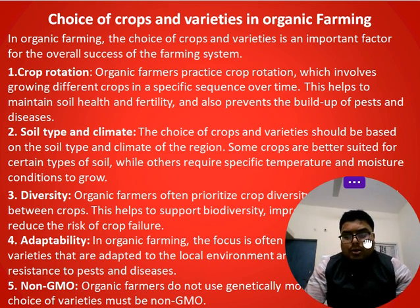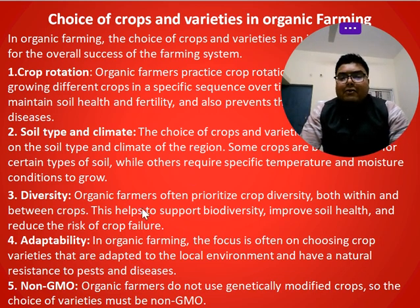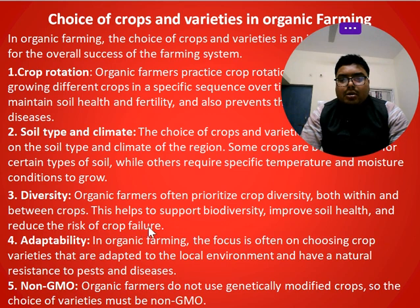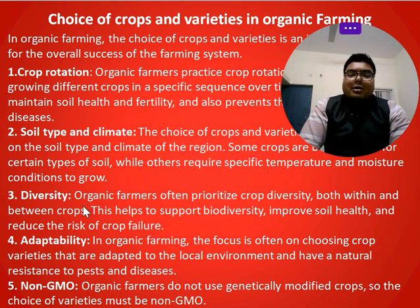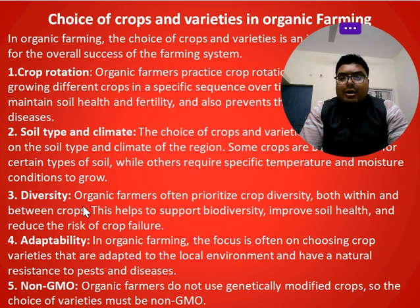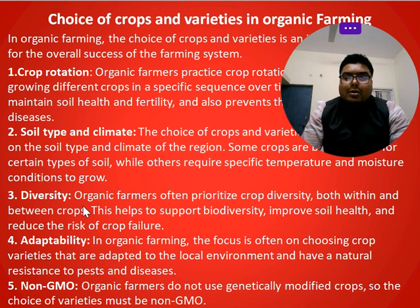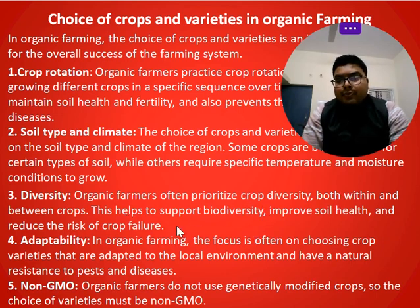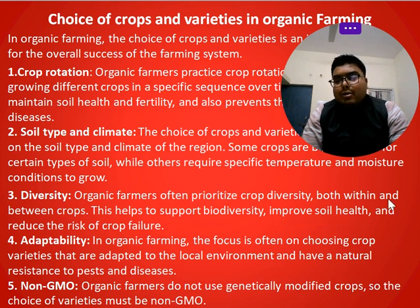Diversity: organic farmers often prioritize crop diversity, both within and between crops. This helps to support biodiversity, improve soil health, and reduce the risk of crop failure. Different types of crop diversity mean different types of crop properties. When biodiversity is good, the health of the soil is good, and the risk of crop failure is reduced.